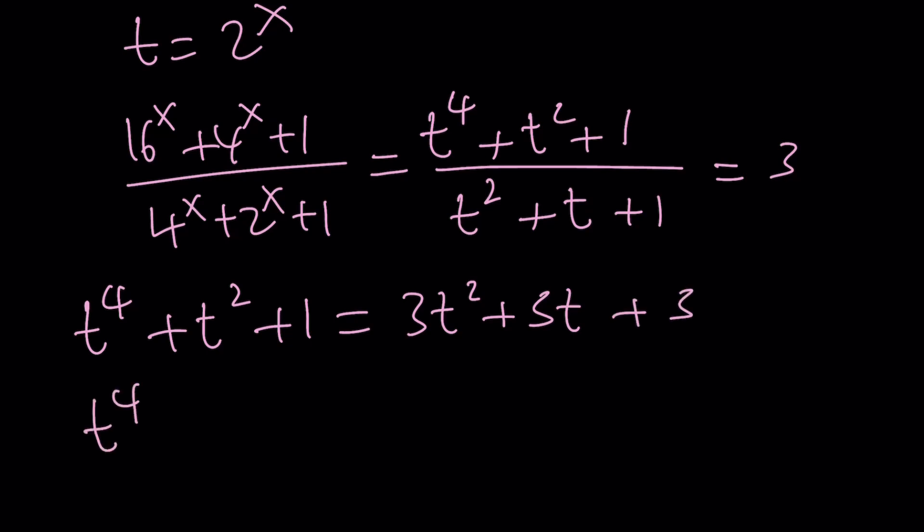And then subtracting everything, putting everything on the left-hand side is going to give us t to the 4th minus 2t squared minus 3t minus 2 equals 0.